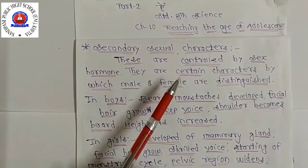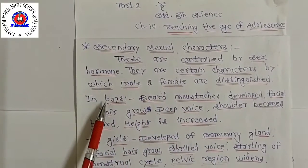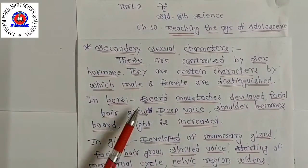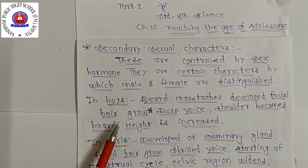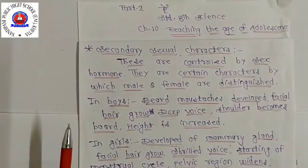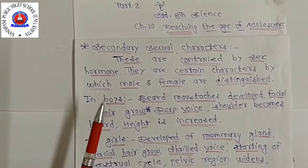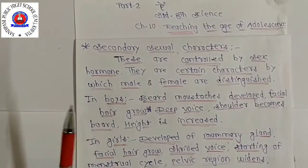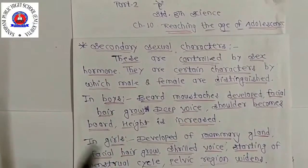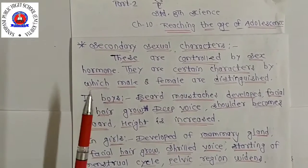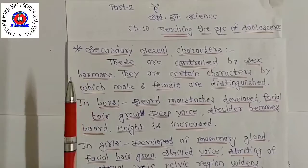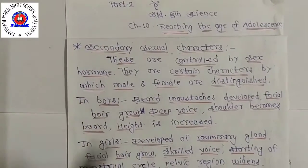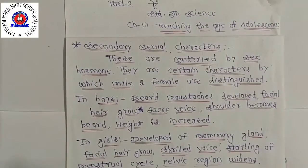In boys, beard and mustache develop, facial hair grows, voice becomes deep, shoulders become broad, and height increases. Hair grows under the armpits and in the pubic region and genital area between the thighs. Hair also grows on other parts of the body like chest and face, and the body becomes more muscular as muscles develop.